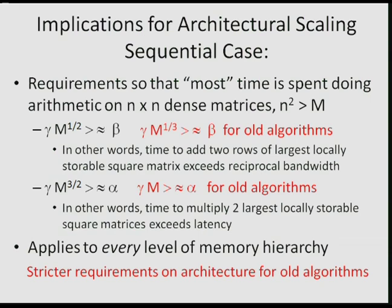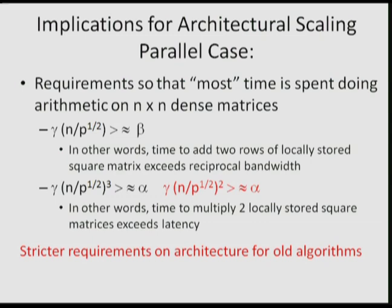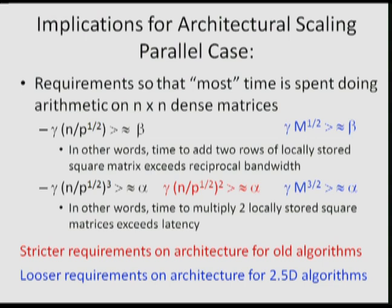In the parallel case, for P processors doing n×n linear algebra: here is the rule to ensure you're not bandwidth-bound, and here is the rule to ensure you're not latency-bound — these are for the new algorithms. The old algorithm is much harder to satisfy for the latency bound. If you use all local memory with the new redundant-copy algorithms, those architectural scaling rules are much easier to satisfy for small matrices, allowing you to scale much better — as we saw in the performance plots.